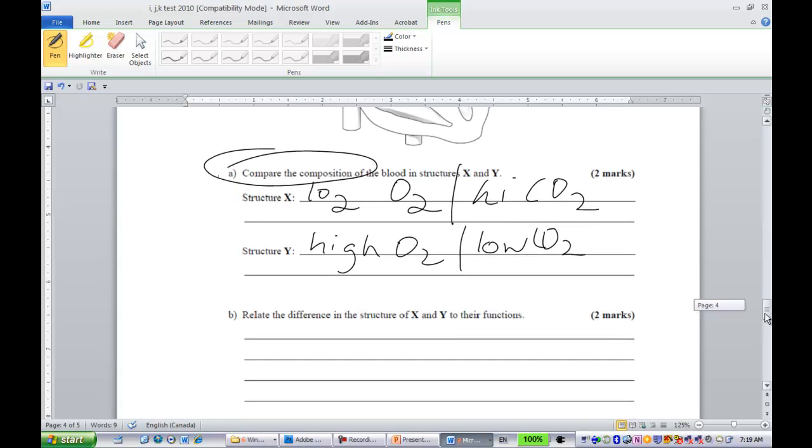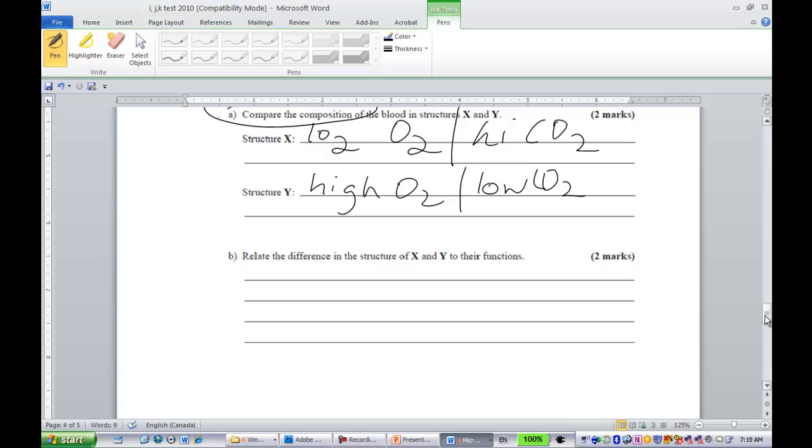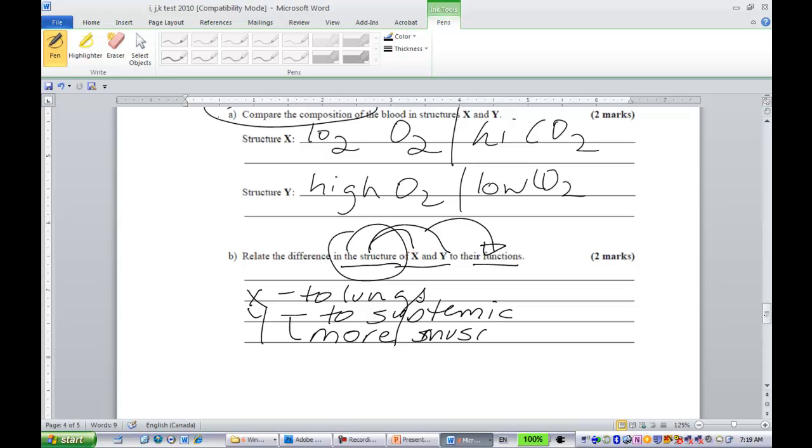And this question not so answered so well, because here, look at this, structure, function. You had to relate the structure of X, relate the structure of Y to their function. Many of you explained their function, that on side X, X is pushing blood to the lungs. That is true. That is the function. Many of you said Y is pushing the blood to the systemic system or to the body cells. That is true. We had to relate the function to the structure. Y is more muscular. The largest part of the heart makes a bigger contraction. This is less muscular. That was why many of you on this part only scored one out of two.